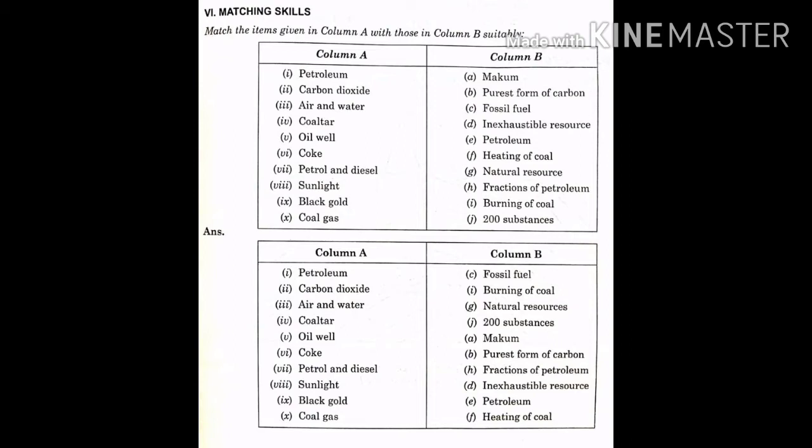In column B: A. Makam, B. Purest form of carbon, C. Fossil fuel, D. Inexhaustible resource, E. Petroleum, F. Heating of coal, G. Agile resource, H. Fractions of petroleum, I. Burning of coal, J. 200 substances.